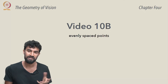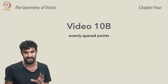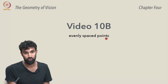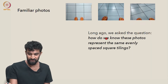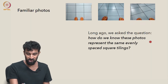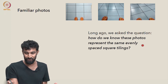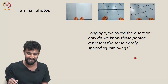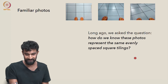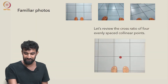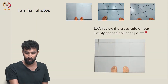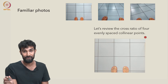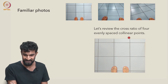Now that we've defined the cross-ratio more precisely, let's take another look at evenly spaced points. Long ago we asked the question: how do we know that these photos represent the same evenly spaced square tiling? Let's review the cross-ratio of four evenly spaced collinear points — we did this in the intro video, but let's quickly see it again.